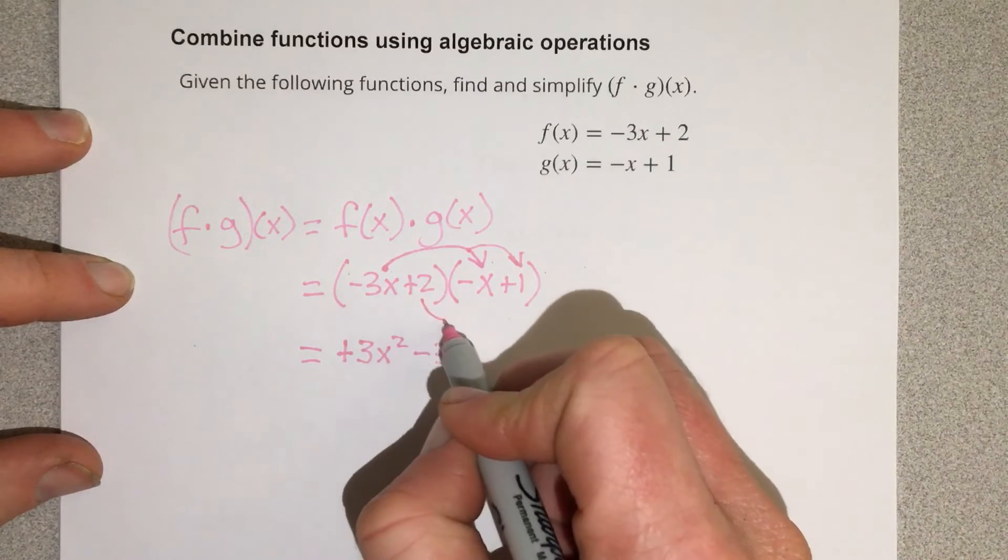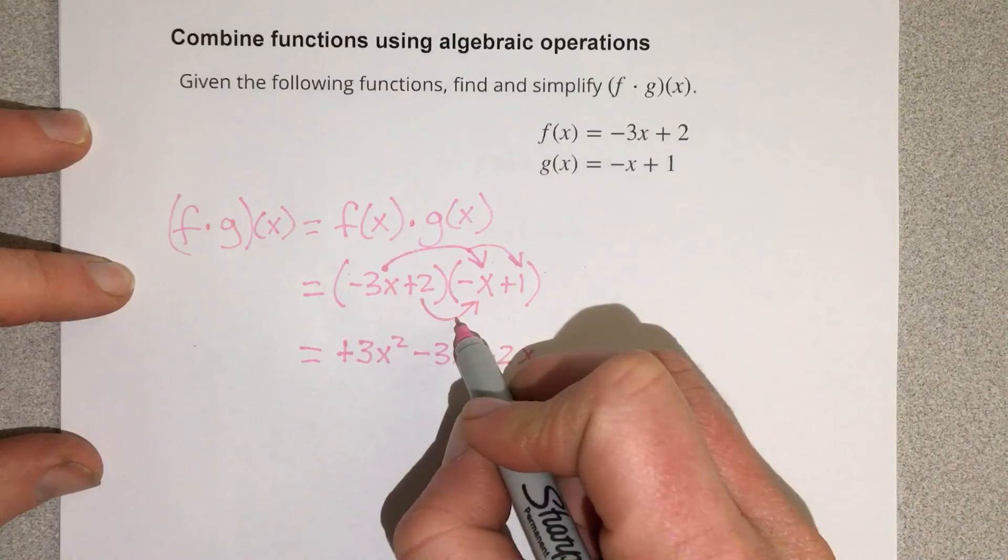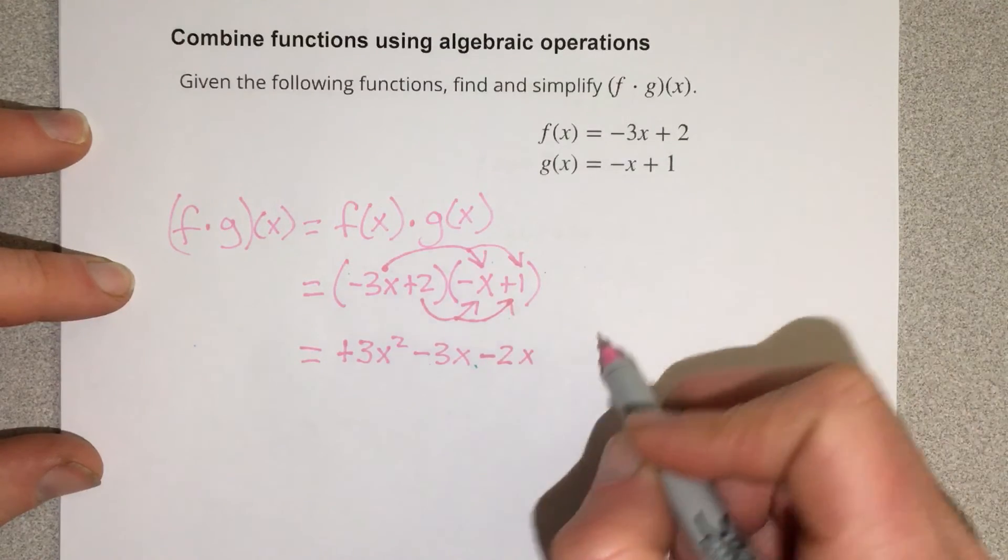I'm going to take the 2 times the negative x, that's negative 2x. And I'm going to take the 2 times the 1, and that's positive 2.